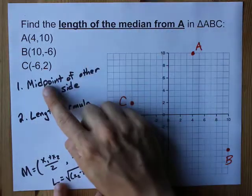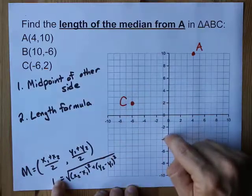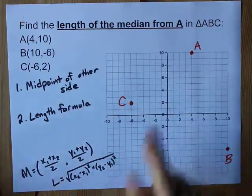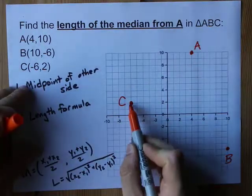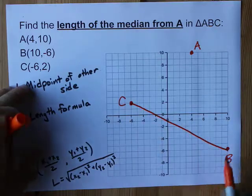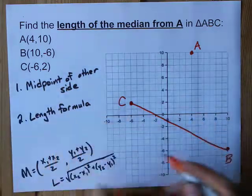What we want to do is find the median from A and its length. The median goes from the midpoint of the other side to that corner. So what we actually need here is the midpoint of the line segment that goes from B to C, the midpoint of BC.